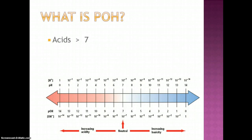Looking at the pOH scale, anything greater than 7 is acidic and anything less than 7 is basic, with a pOH of 7 still equating to neutral.